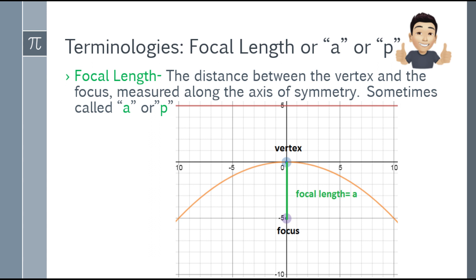Moving on, let's have the focal length — sometimes called A or P, depending on your teacher or textbook. The focal length is the distance between the vertex and the focus, measured along the axis of symmetry. So the distance of the vertex from the focus — that is your focal length, or A or P.